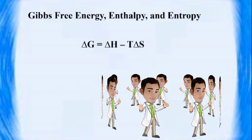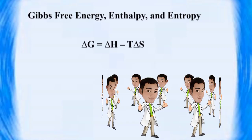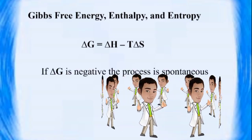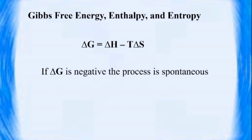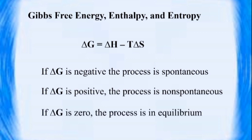The sign of delta G is used as the basis to determine whether the process is spontaneous. If delta G is negative, the process is spontaneous. If delta G is positive, the process is non-spontaneous. And if delta G is zero, the process is in equilibrium.